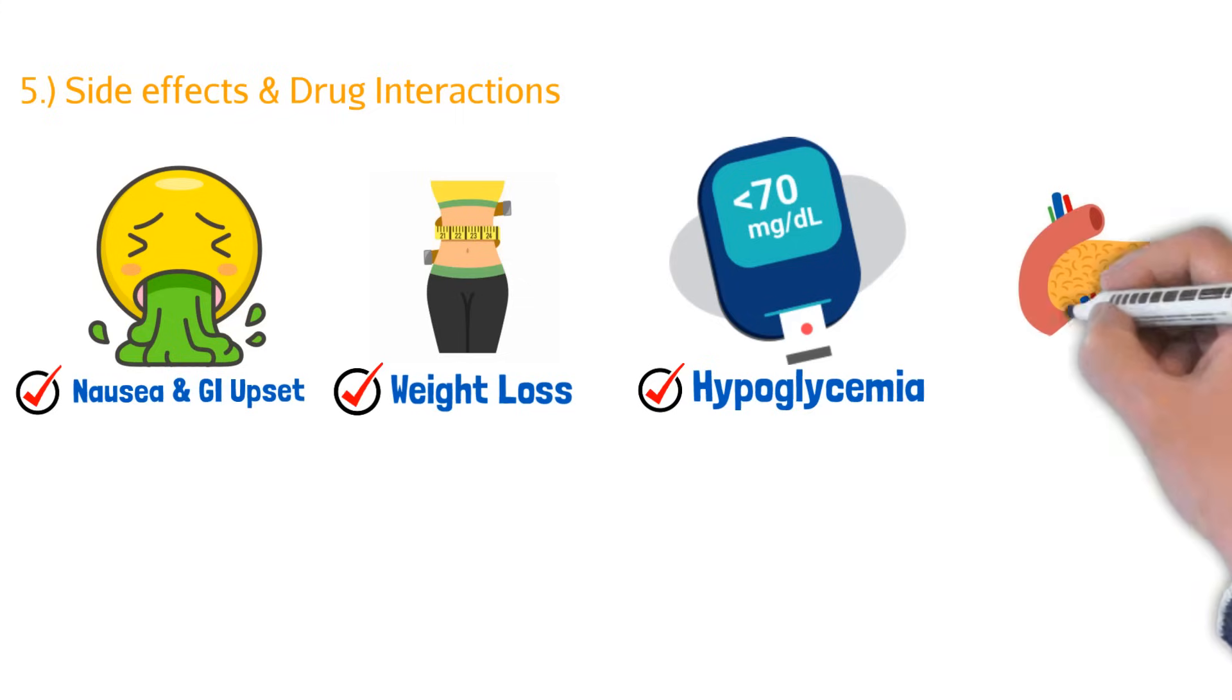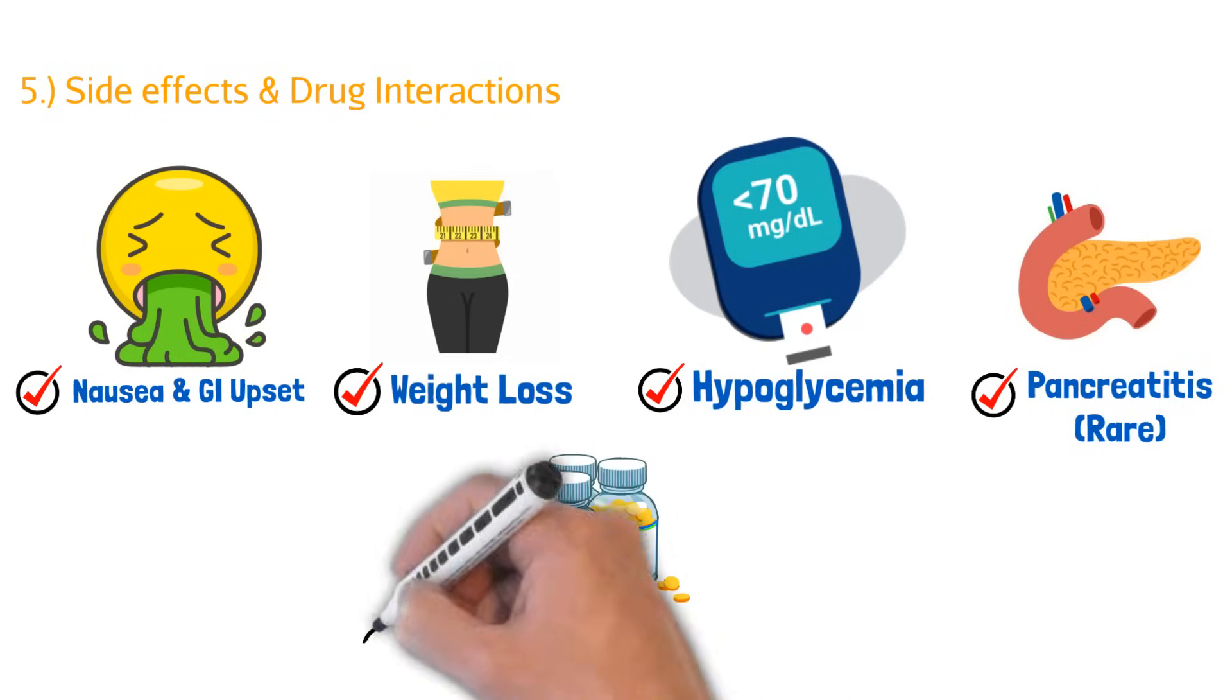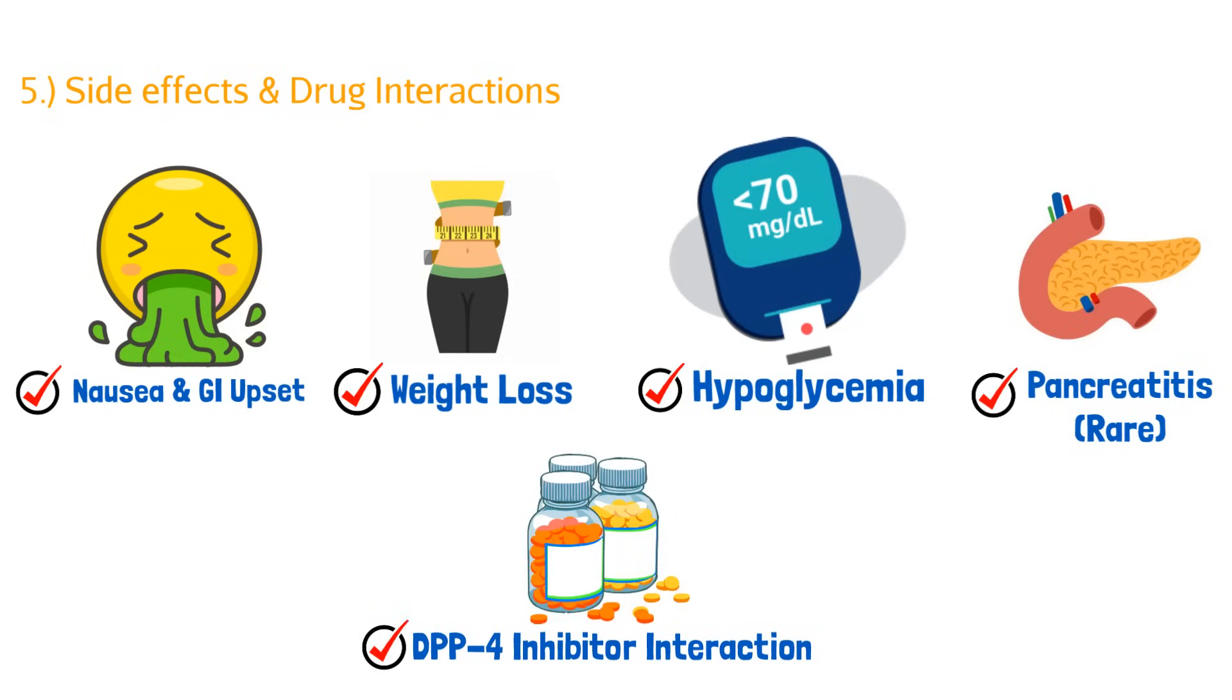The next side effect is going to be pancreatitis. This is super rare. We don't see it that often, but remember it does affect the pancreas when we take a GLP-1. And this is just inflammation of the pancreas. The last thing here is a drug interaction. You do not want a patient to take a GLP-1 agonist and a DPP-4 inhibitor. For example, if a patient takes a GLP-1 agonist and they take a DPP-4 inhibitor like sitagliptin, there'll be an extreme increase in GLP-1 activity because DPP-4 inhibitors, they're supposed to stop the breakdown of GLP. So if you're taking GLP-1 and you're blocking the degradation or destruction of GLP-1, you're going to have such a high volume of GLP-1 in your bloodstream and your body that you're going to have a larger side effect profile. And we don't want that.